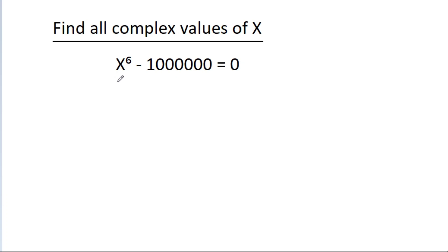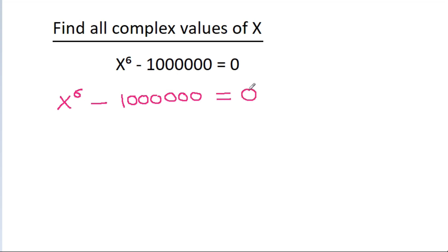In this video, we have given that x power 6 minus 1 million is equal to 0. Then find all complex values of x. So we have x power 6 minus 1 million is equal to 0, and 1 million is 10 power 6, so x power 6 minus 10 power 6 is equal to 0.